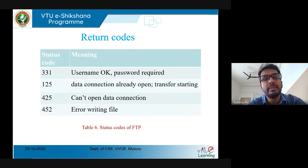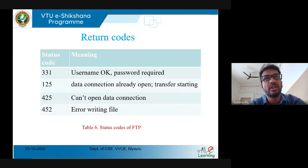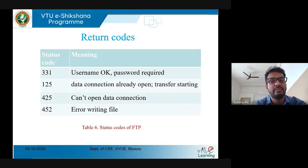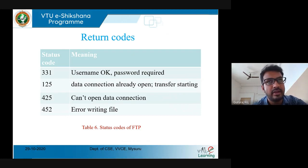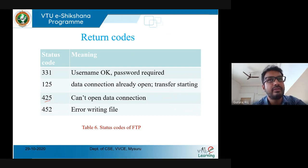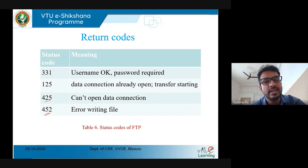Like HTTP protocol, FTP also has return codes called status codes. Status code 331 means the username is okay and a password is required. Status code 125 means the data connection is already open and the file transfer is starting. Status code 425 means the data connection cannot be opened. Status code 452 means there is an error writing the file.